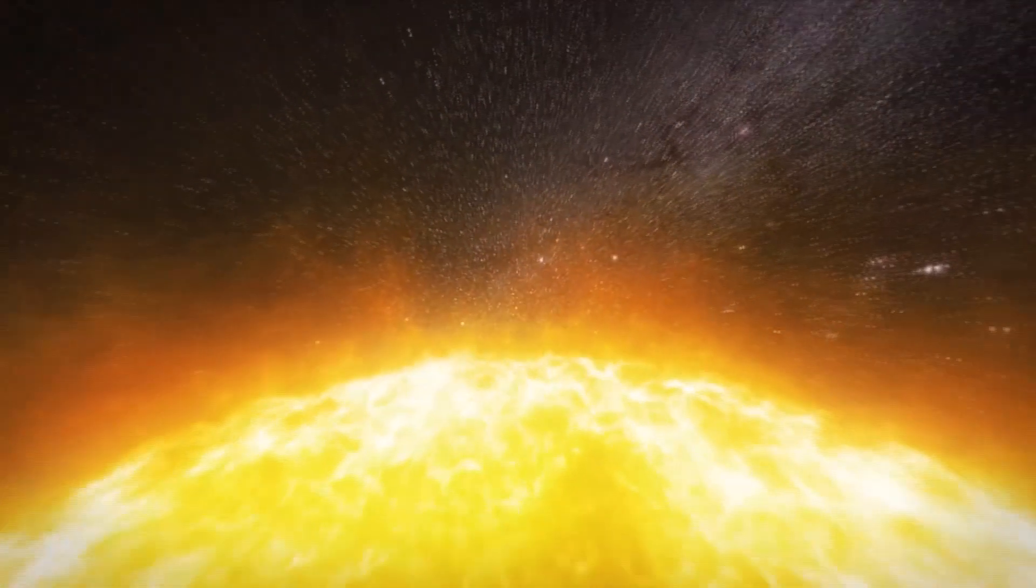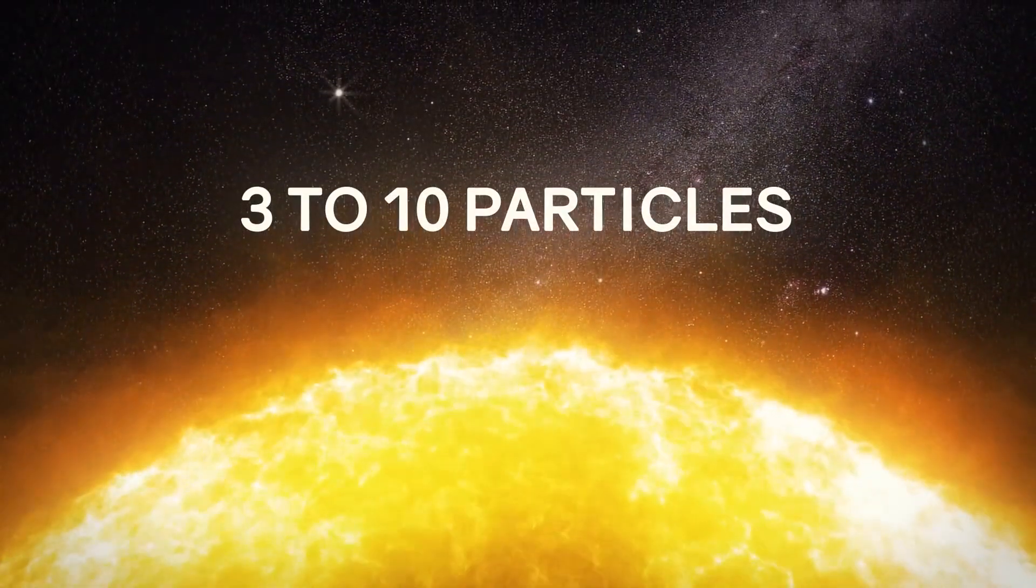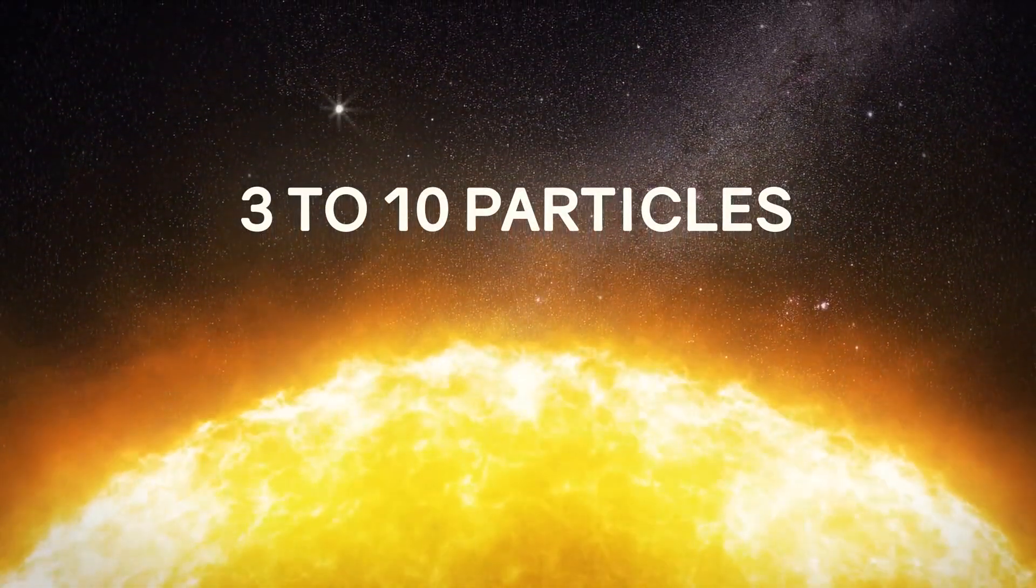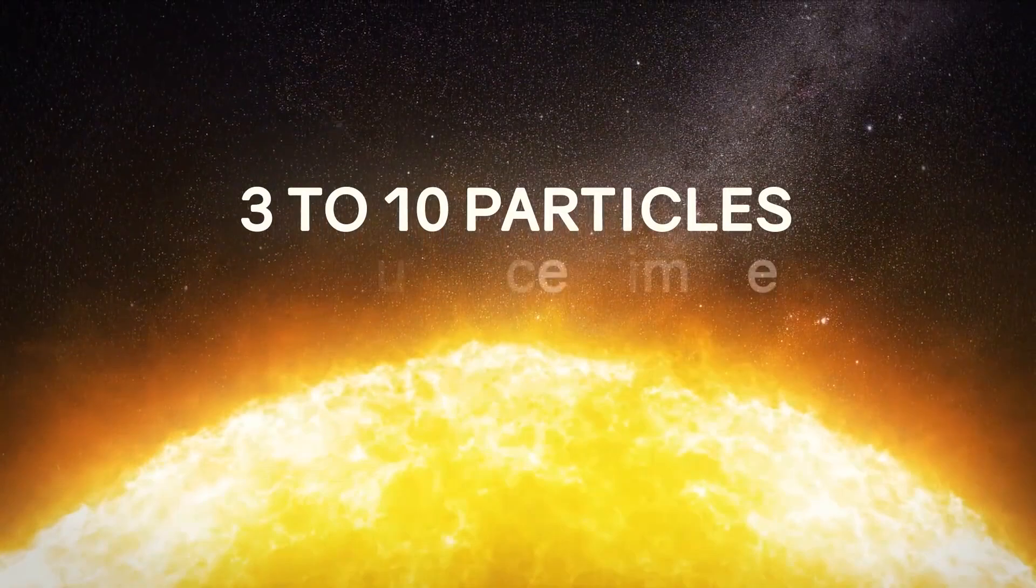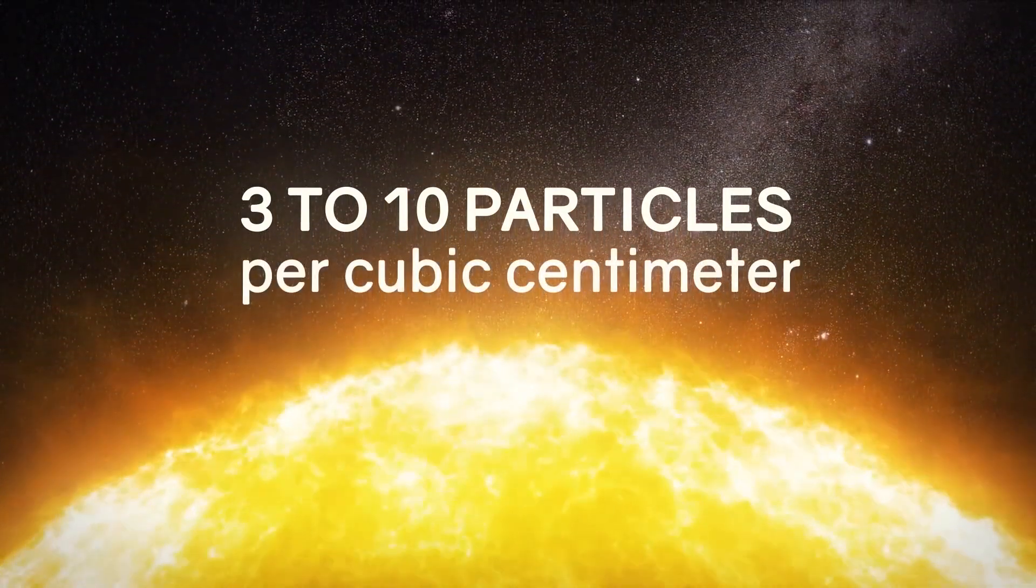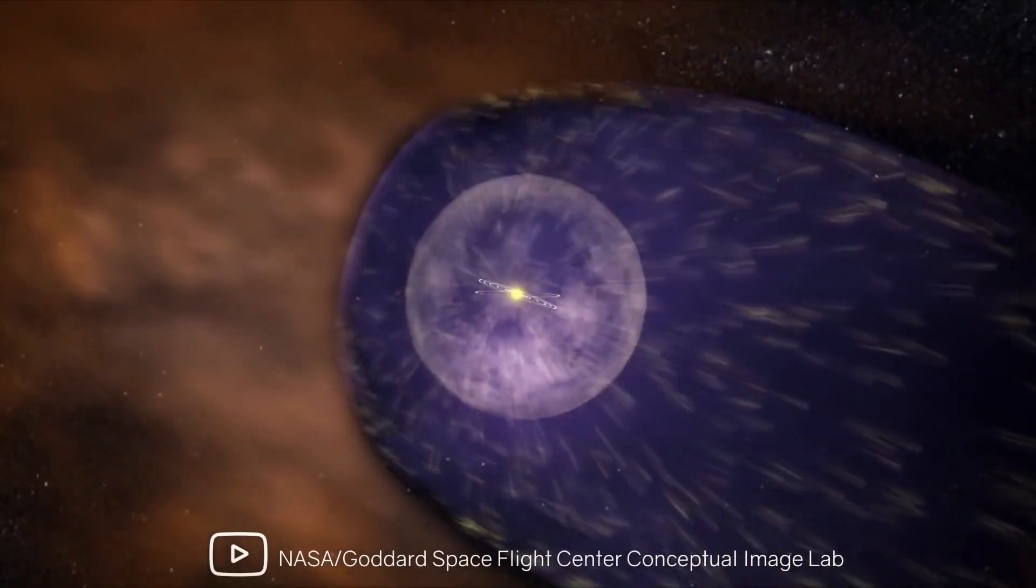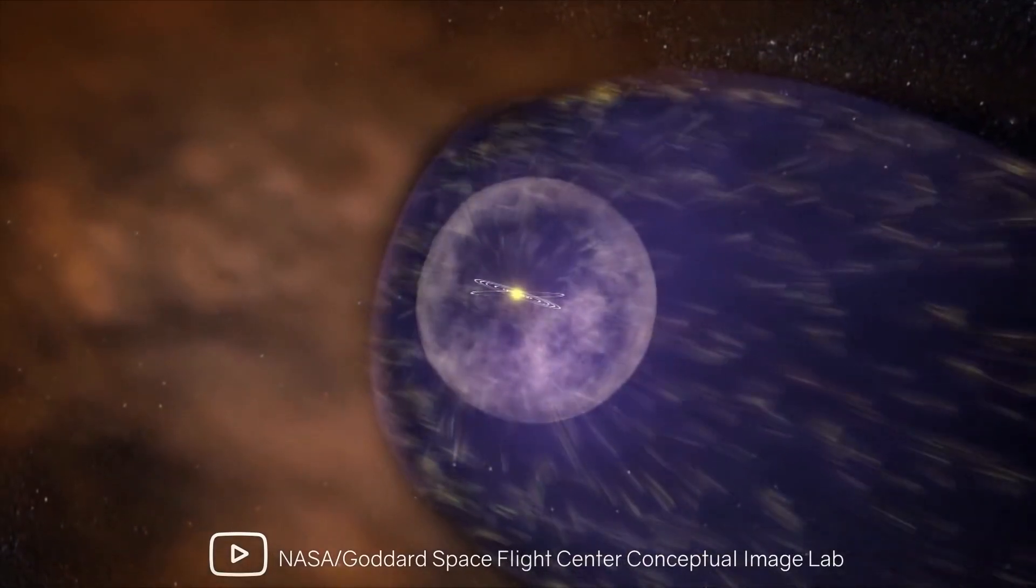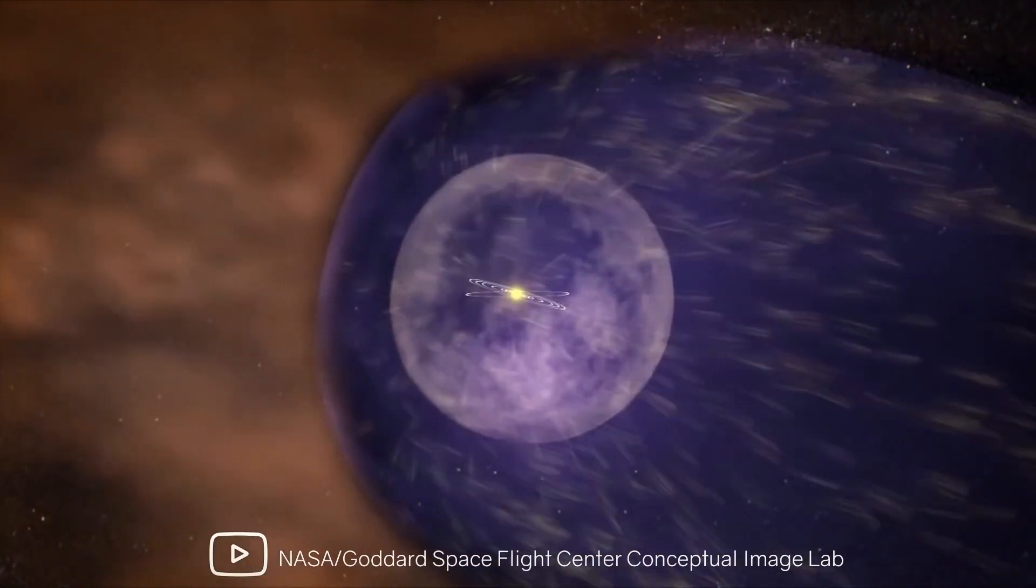The solar wind has an average density of protons and electrons of 3 to 10 particles per cubic centimeter in the solar system, but it decreases as one gets further away from the Sun. The solar system's edge has the lowest density of space. The heliopause is the name for this boundary.